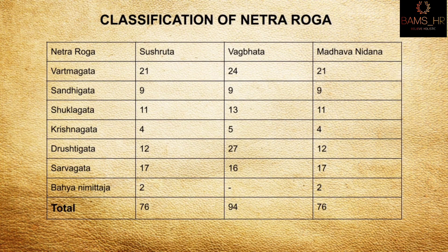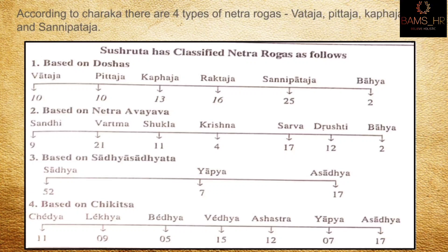According to Charaka, the main four types of netrarugas are vataja, pittaja, kaphaja, and sannipataja. Based on dosha, he classified: vataja 10, pittaja 10, kaphaja 13, raktaja 16, sannipataja 25, and bahya 2.